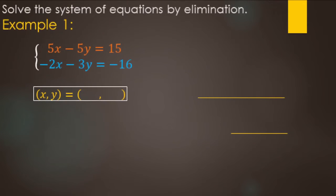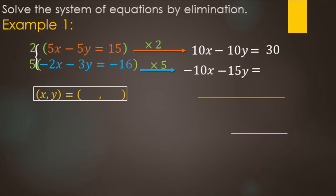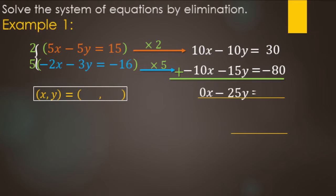To make the x's tens, we multiply the top equation by 2 and the bottom equation by 5. Two times 5x makes 10x, two times negative 5y makes negative 10y, and 15 times 2 makes 30. For the bottom: 5 times negative 2x makes negative 10x, 5 times negative 3y makes negative 15y, and 5 times negative 16 makes negative 80. Adding: 10x minus 10x gives zero x's — eliminated. Negative 10y plus negative 15y makes negative 25y, and 30 minus 80 makes negative 50.